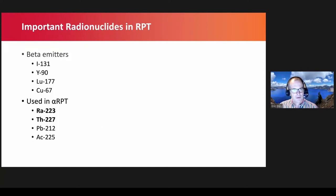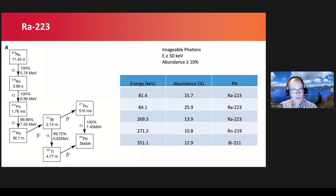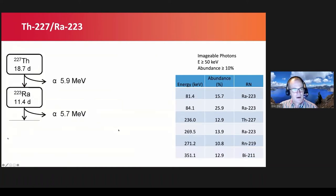Some of the radionuclides used in targeted radionuclide therapy include radium-223 and thorium-227, which are alpha emitters. Radium-223 has a complicated decay scheme with a number of daughters; lead-211 has a long half-life, and ideally we'd like to image the bismuth-211. The photon abundances are relatively low and there are high-energy photons that make imaging challenging. For thorium-227, in addition to imaging radium, the thorium decays to radium with an 18-day half-life, so we'd like to image thorium and radium simultaneously.